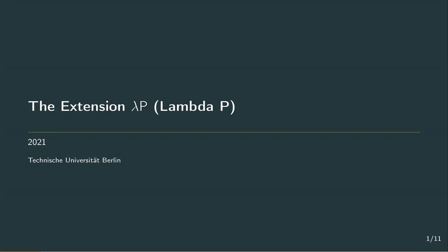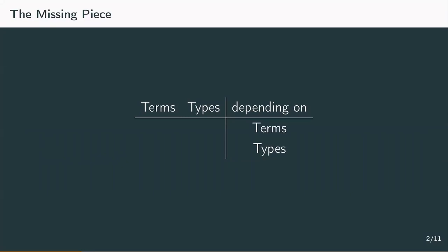So far we've talked about three differently typed lambda calculi where we introduced three different dependencies: terms depending on terms in the simply typed lambda calculus, terms depending on types in lambda 2, and in weak omega the newest concept, types depending on types.